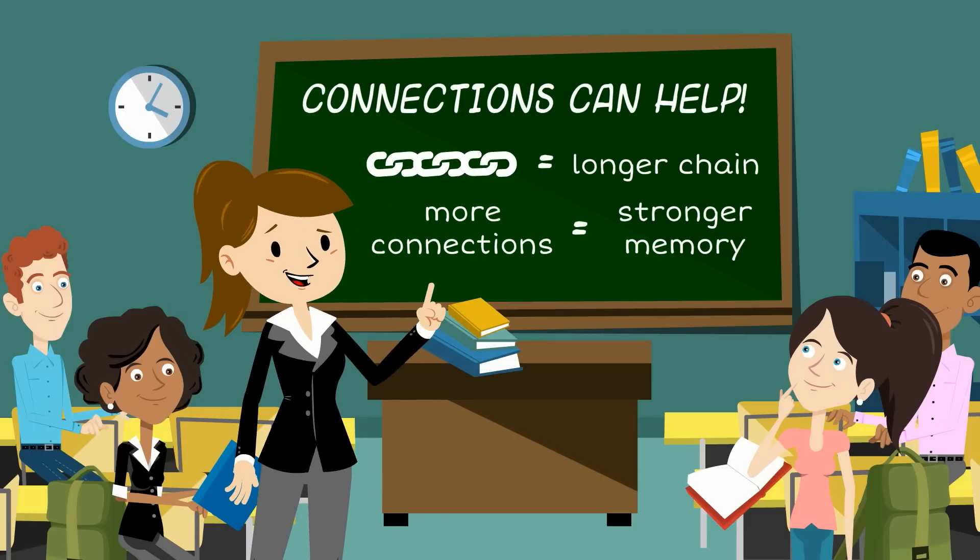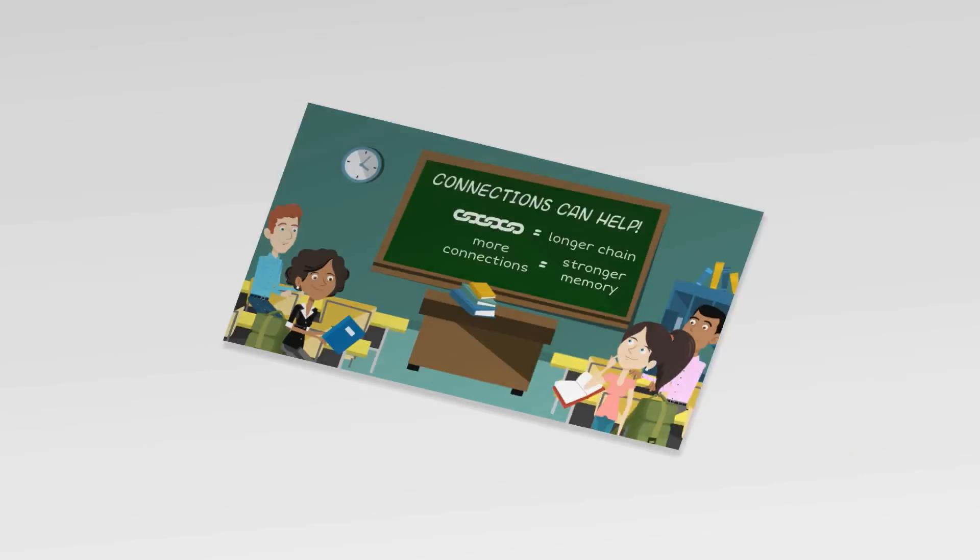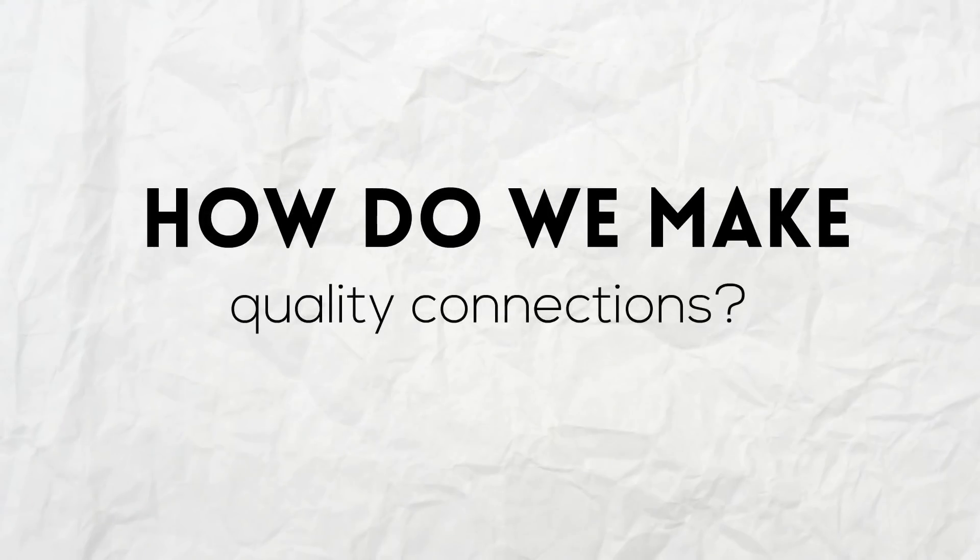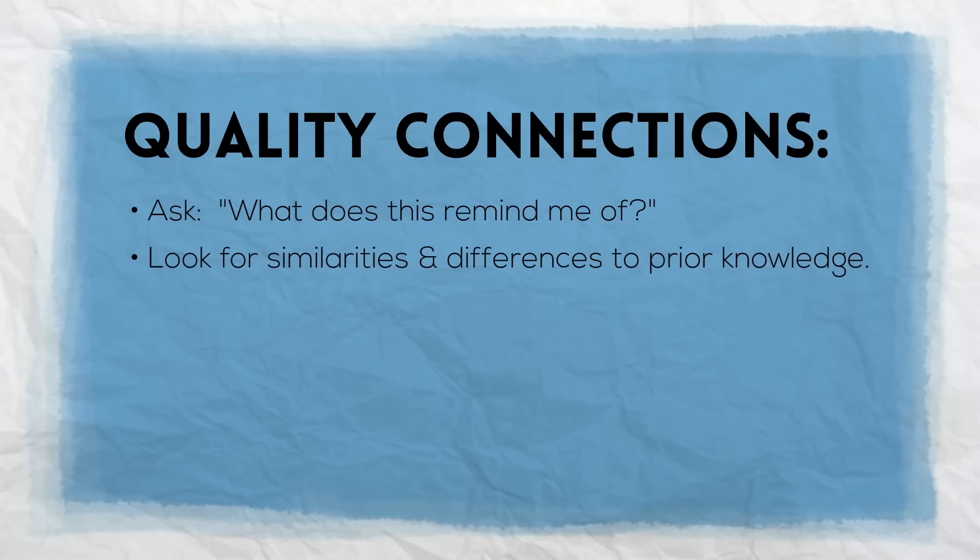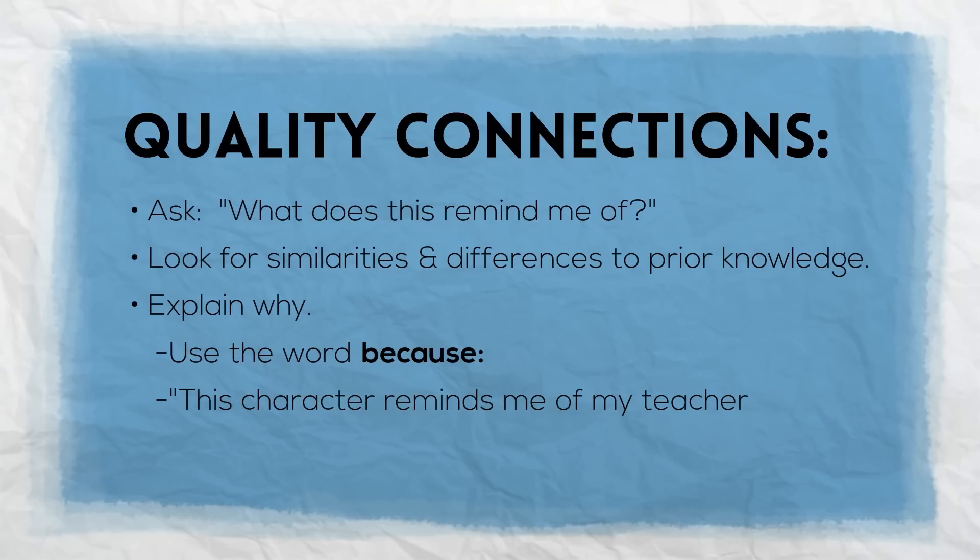You can make a connection to what you're reading by asking yourself, 'What does this remind me of?' Look for ways that what you're reading is both similar to and different from other things that you already know. To make a connection even stronger, you should be able to explain why you are making that connection. You can do this by simply adding the word 'because' to your connection. Instead of saying 'this character reminds me of my teacher,' you would say 'this character reminds me of my teacher because they're both really funny or really smart.'